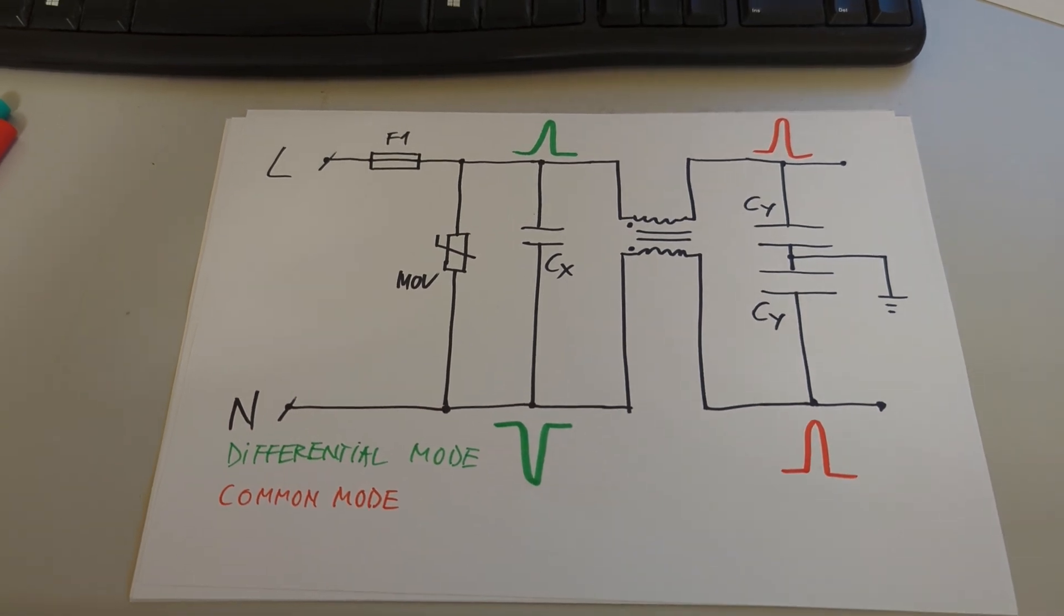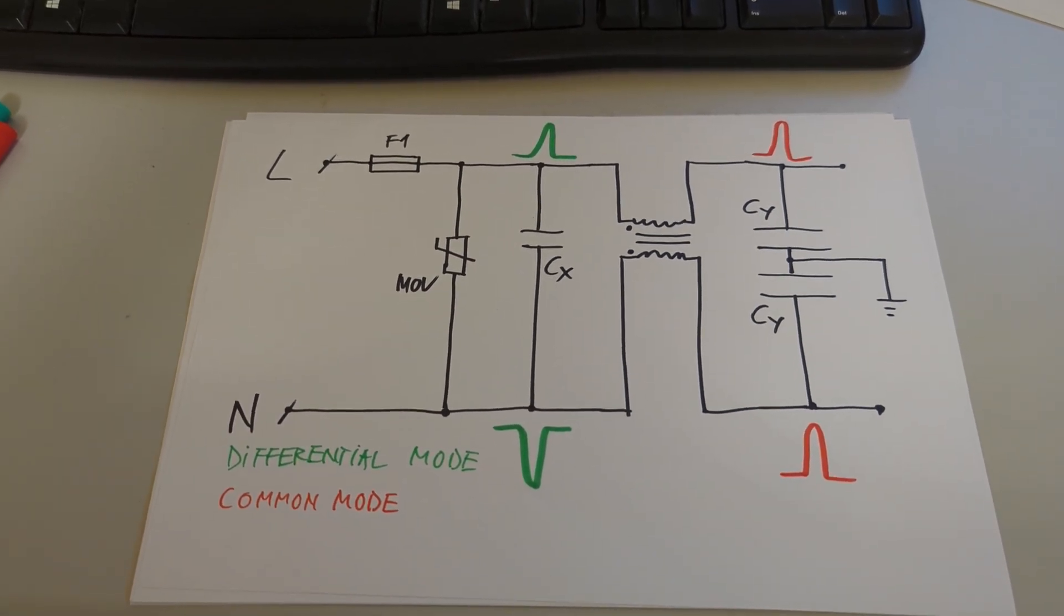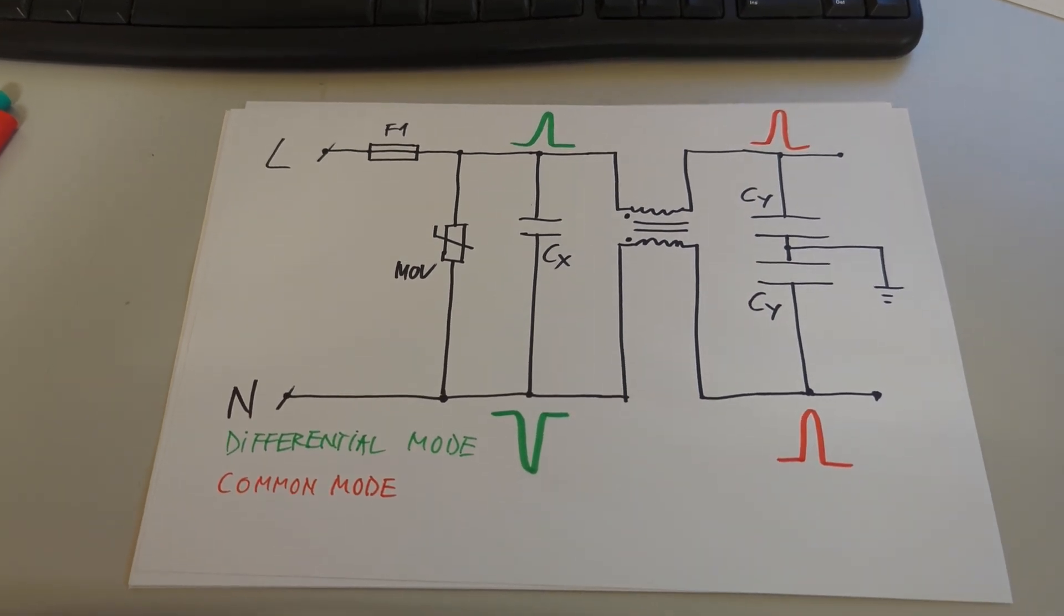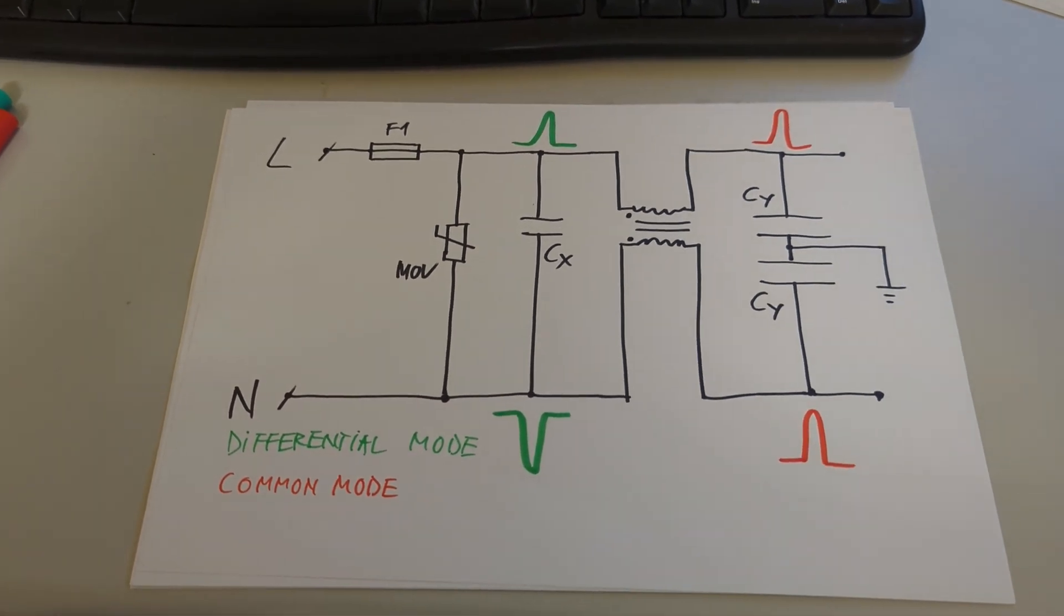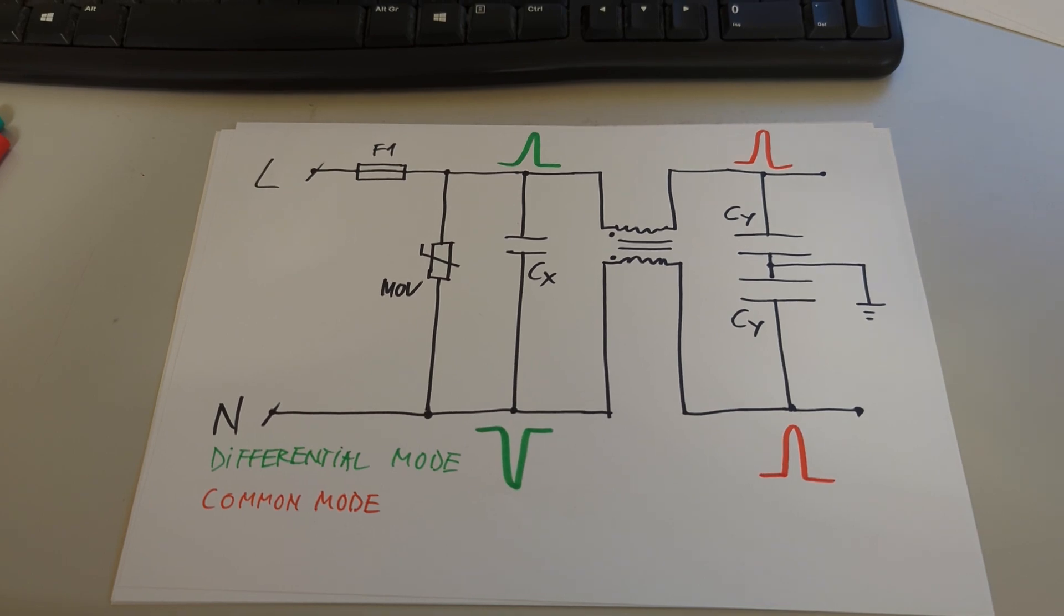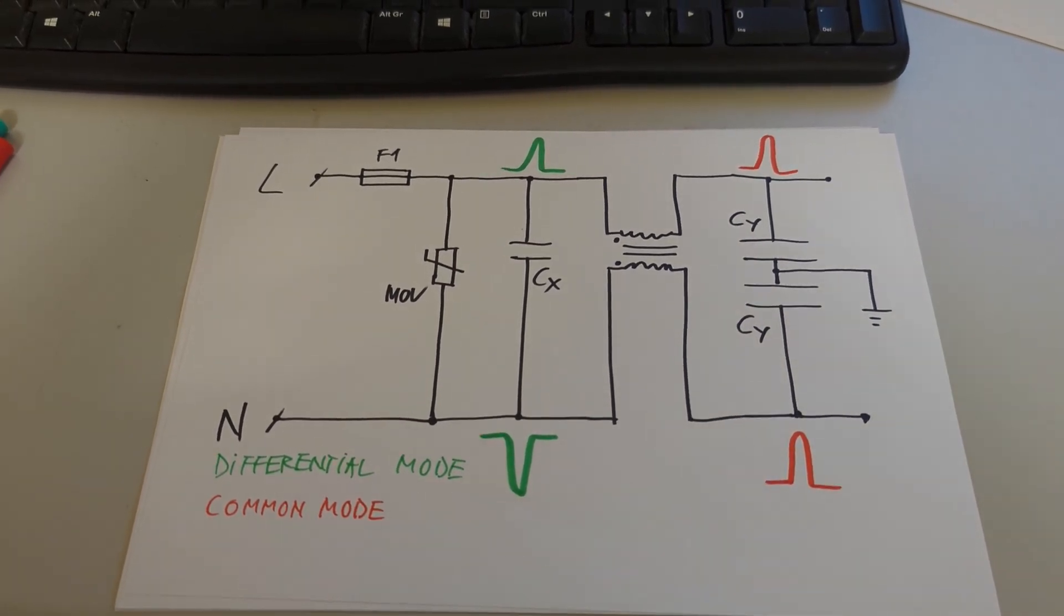What this means is that even if we like to think of the mains voltage as a perfect clean sine wave and so on, it is actually far from perfect and it can have lots and lots and lots of noise due to the way all the things that are connected to the mains voltage operate.